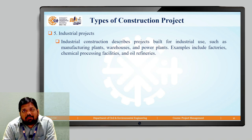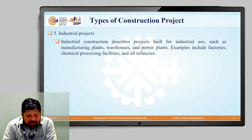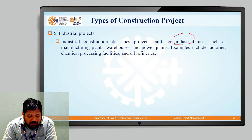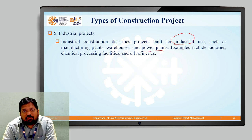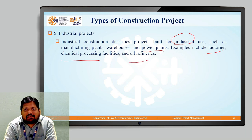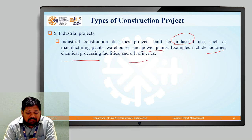Next are industrial projects. Industrial construction projects describe buildings constructed for industrial use, generally for manufacturing purposes — such as manufacturing plants, warehouses for storing material, and power plants for power generation. Examples of industrial projects include factories, chemical processing facilities, and oil refineries.